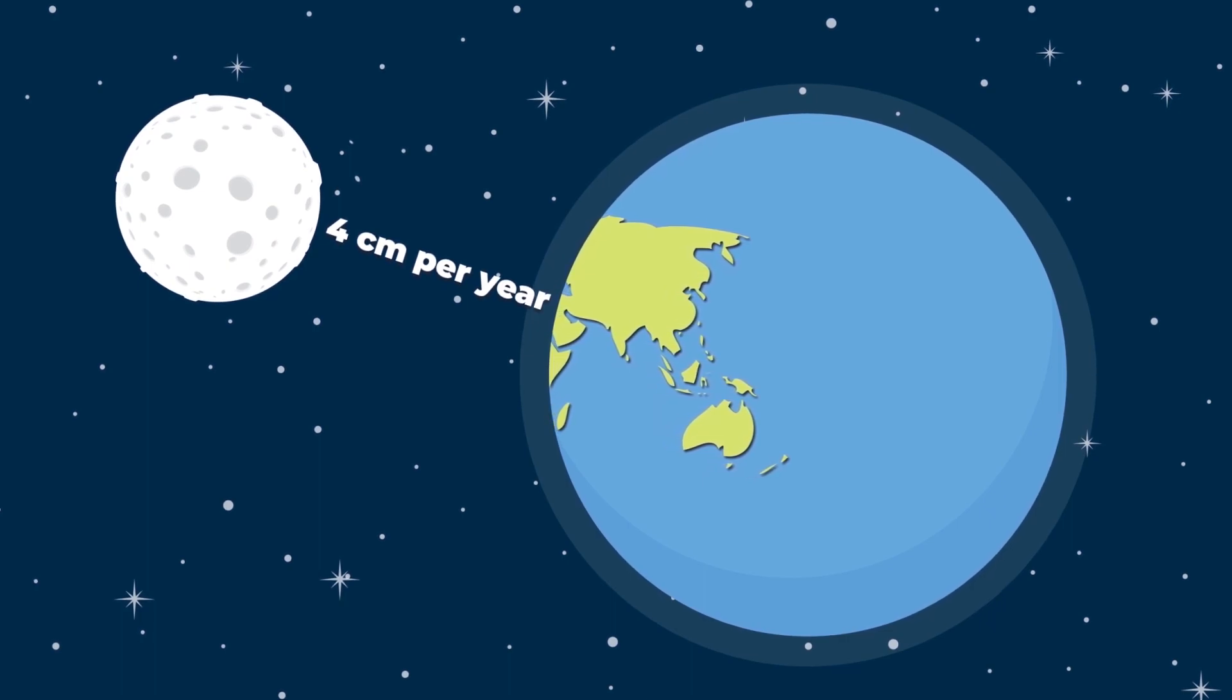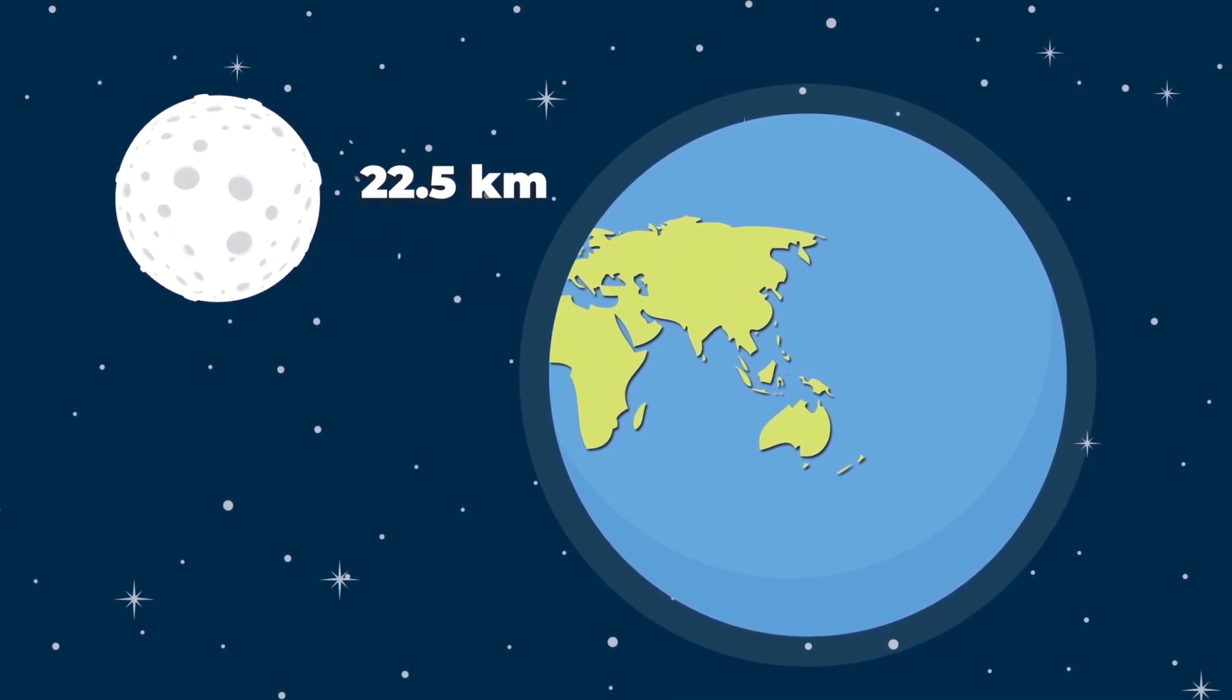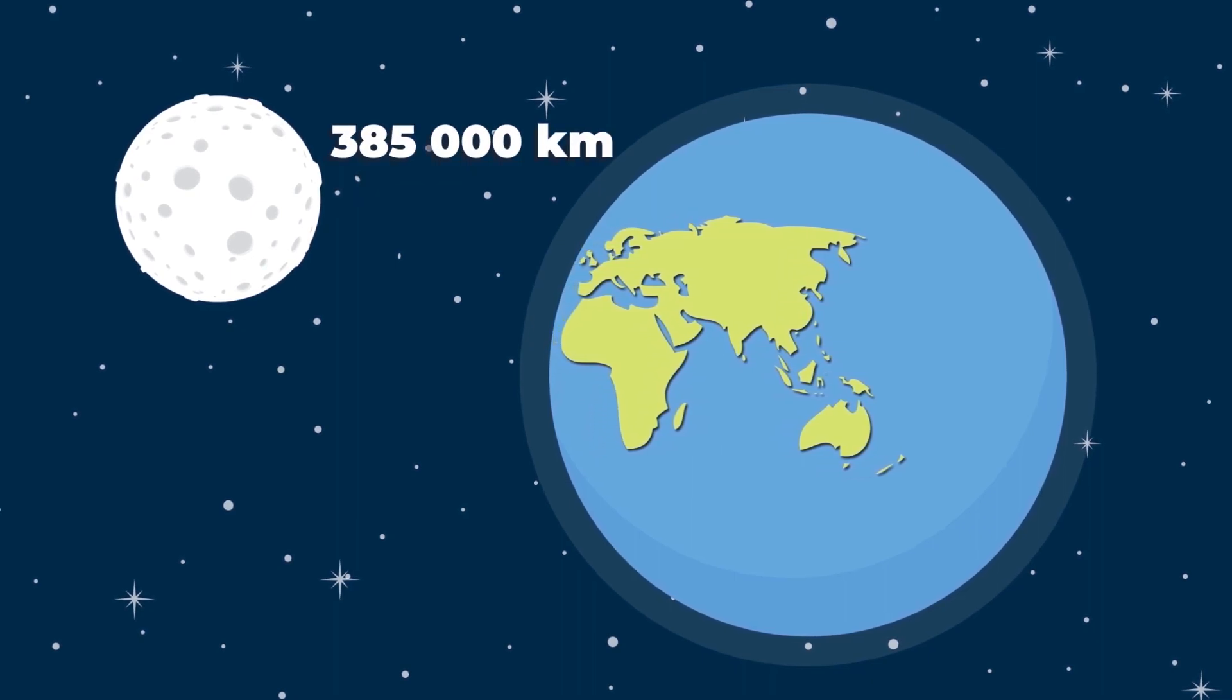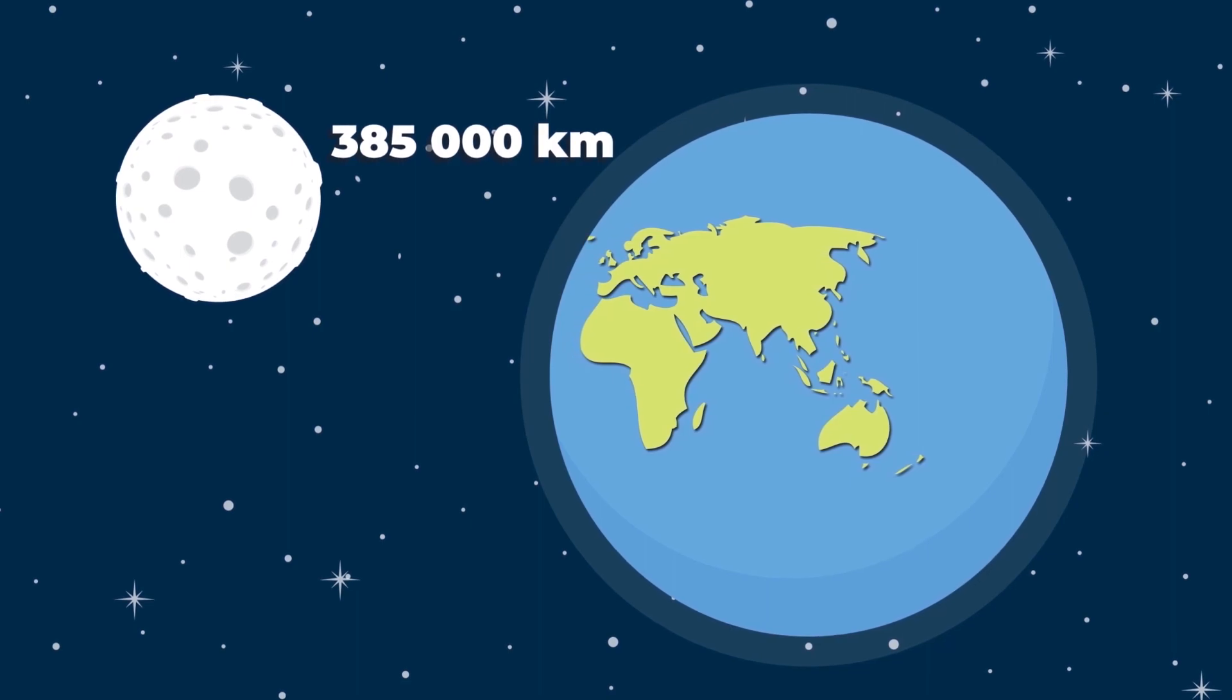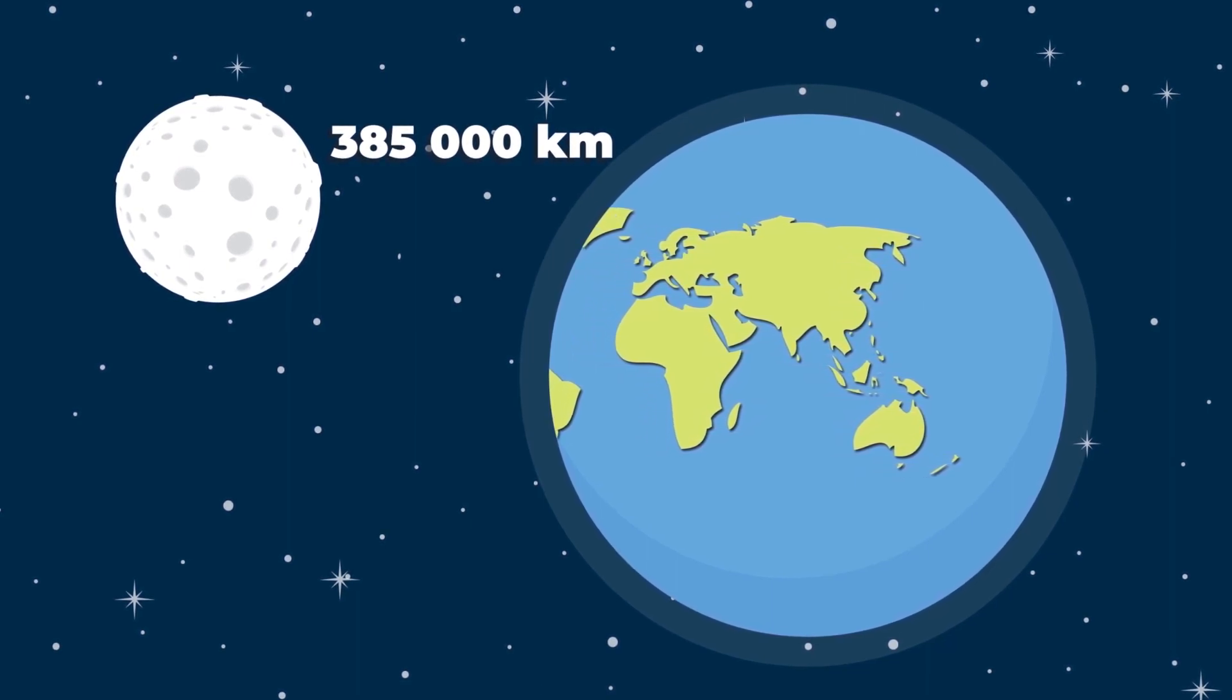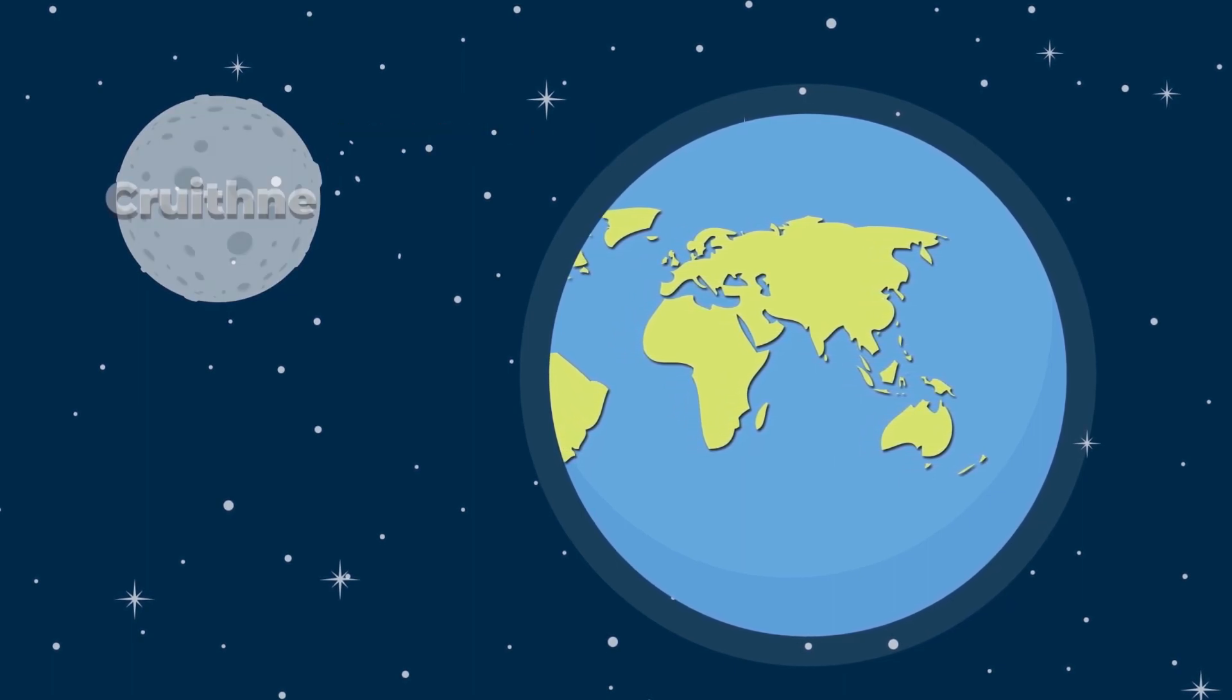If you look at the situation on a cosmic scale, then it all really seems small. When the satellite was just being formed, it was less than 14 miles, only 22.5 kilometers, from the Earth. Now the distance is 385,000 kilometers, over 239,000 miles. But don't worry, the Earth won't be left without a satellite. It has another one. Kruithne.